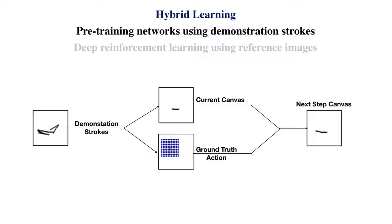We adopted the hybrid learning scheme. The first step is pre-training neural networks using demonstration strokes. We construct reference images comprising two strokes randomly placed on the canvas. From the reference image, we can collect pairs of current canvas and the ground truth action, which produce the next step canvas.